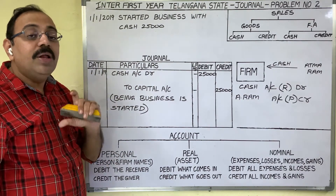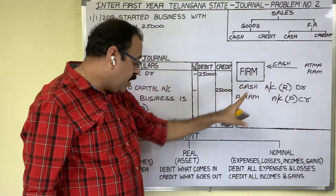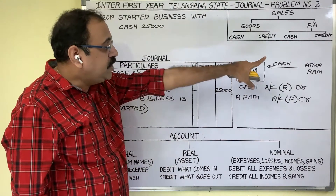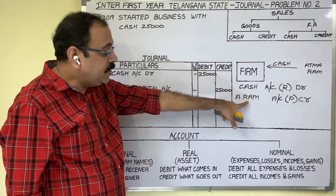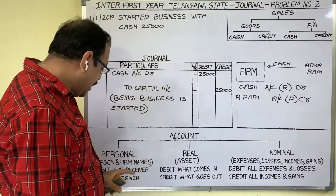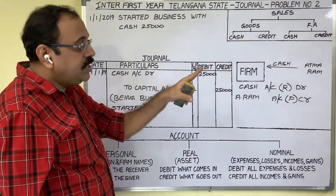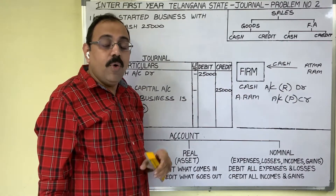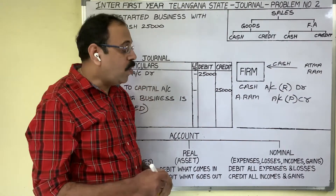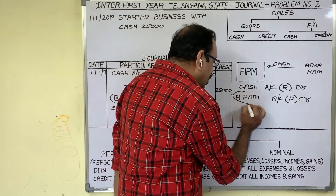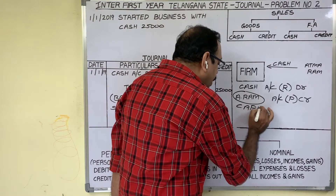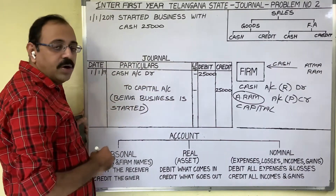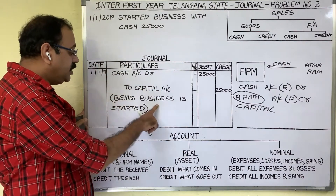The third step is to apply the double entry principles. For real account, the double entry principle is: debit what comes in, credit what goes out. Cash is coming into the firm — debit cash account. For personal account, the double entry principle is: debit the receiver, credit the giver. Atmaram is giving cash to us — he is the giver, therefore credit Atmaram's account. The owner name we should not write in the accounts; when the owner name comes in credit, instead of writing that name we should write the word 'capital'. The final entry is: cash account Dr to capital account. Narration: being business is started.